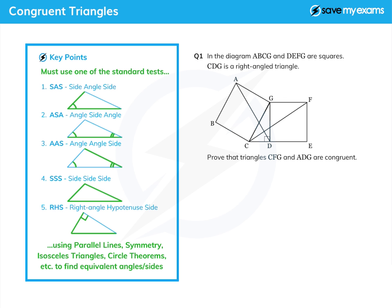Right, let's have a look at this one then. So we have two squares, the slightly bigger one here and the slightly smaller one here: ABCG and DEFG. And we also have a right angle triangle in between them.